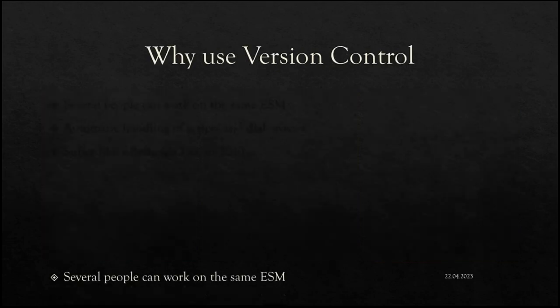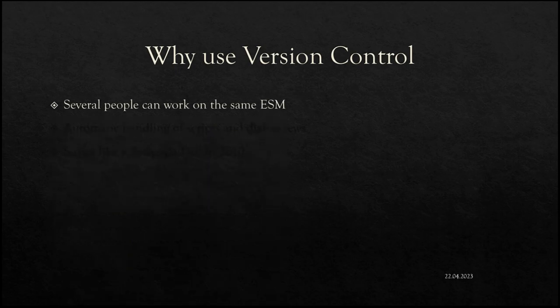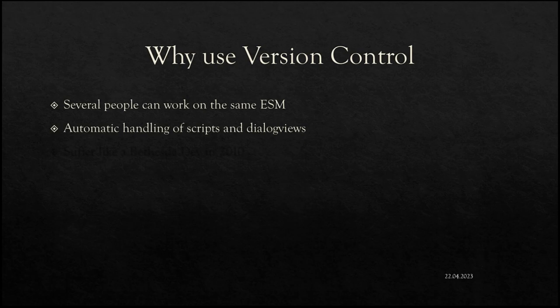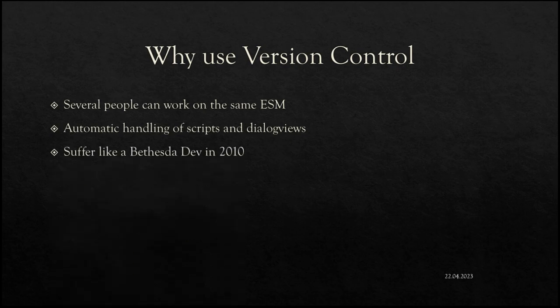Why use the version control system? It enables you to have multiple people work on the same master file. So if you have a project you do with friends or a team of people, it's difficult to work on the same file, and the version control system enables you to do that. It also automatically handles some asset files like scripts and dialogue views — it sets the file name appropriately, compiles them, and so on. And you can suffer like a real Bethesda dev did in 2010 when they used it to make Skyrim.